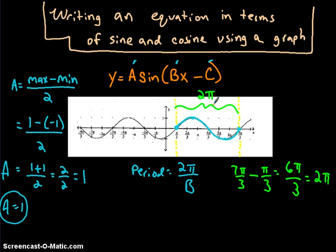So 7π over 3 subtract π over 3. Since they both have the same denominators, you can subtract across the top. That'll leave you with 6π over 3, which reduces to be 2π. So my period of this curve is 2π.